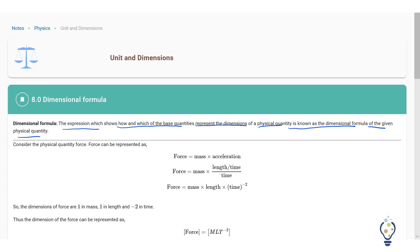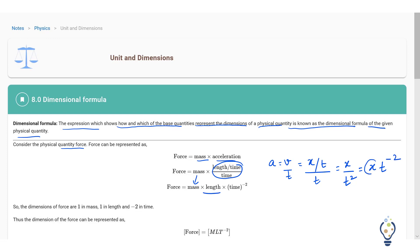Let us understand the dimension formula with the help of an example. Consider the physical quantity force. Force is nothing but mass into acceleration. Acceleration can be written as velocity by time, and velocity in turn can be written as displacement by time. So acceleration is displacement by time squared, i.e., x by t squared. Force equals mass into x by t squared, which is x times t minus 2. Displacement can be written as length, so force has been represented in terms of fundamental quantities: mass, length, and time.